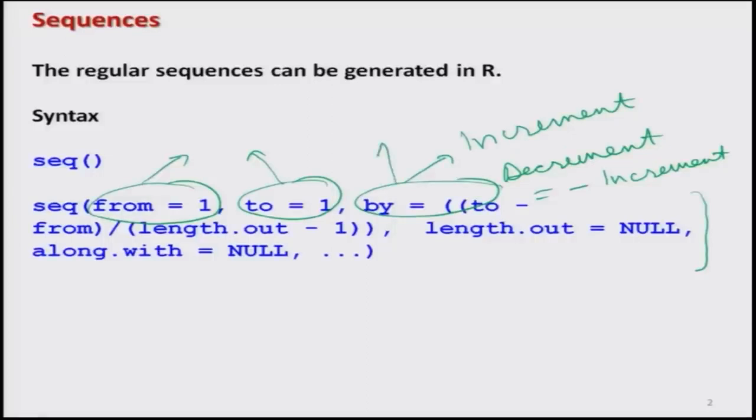Similarly, the 'by' value can also be positive, negative, integer, or fractional — all sorts of possibilities are there. If you practice more examples with different types of combinations, you will learn more. On the same lines, let us try to take some more examples and see how the sequence can work.